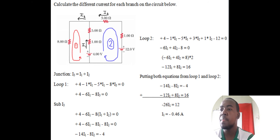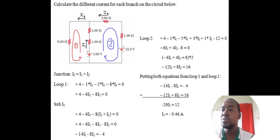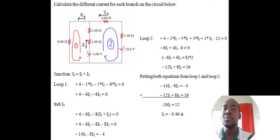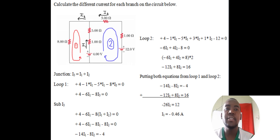We now have two equations: (1) negative 14·I1 minus 8·I2 = negative 4, and (2) negative 6·I1 + 4·I2 = 8. To eliminate I2, multiply equation 2 by 2: negative 12·I1 + 8·I2 = 16. Adding to equation 1: negative 26·I1 = 12, so I1 = negative 12/26 = negative 0.46 amps.